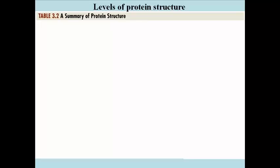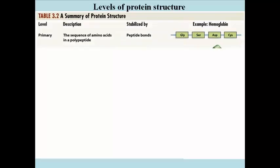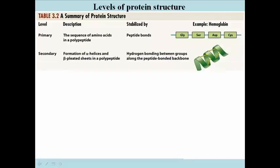These are the four levels of protein structure, beginning with primary structure, which is just the sequence of amino acids in a polypeptide chain. Here is secondary structure. Shown here is the alpha helix, created by hydrogen bond formation between nearby amino acids in a chain. Secondary structure also includes the beta-pleated sheets in a polypeptide, indicated here, but not illustrated — we'll see that a little later.